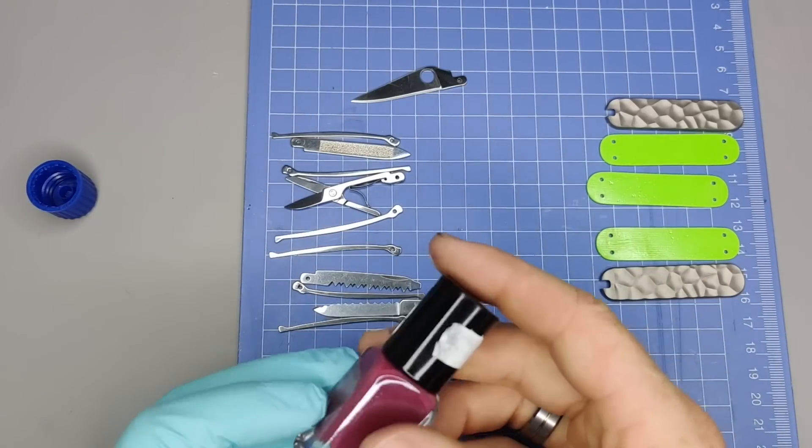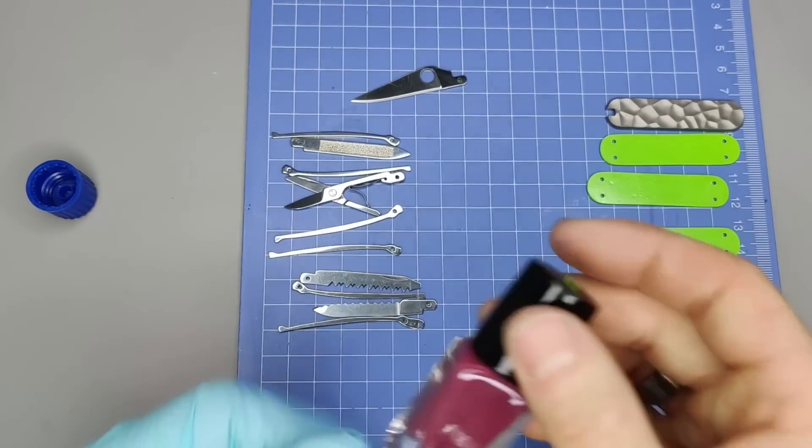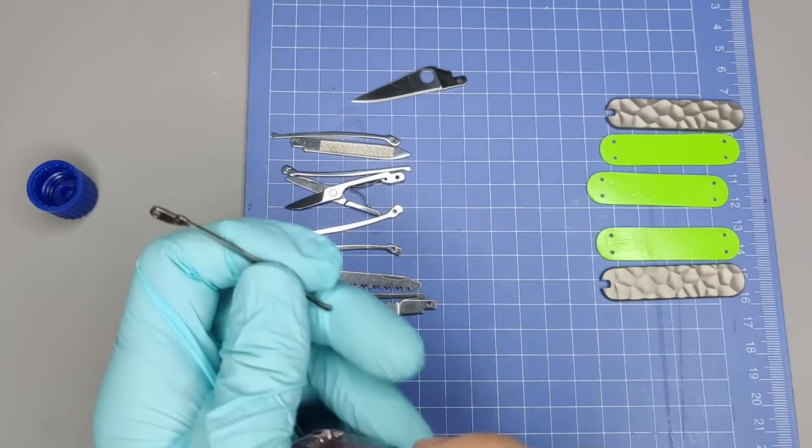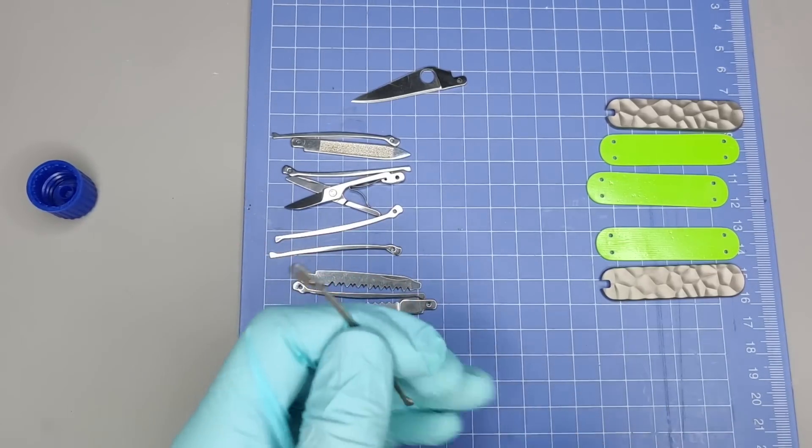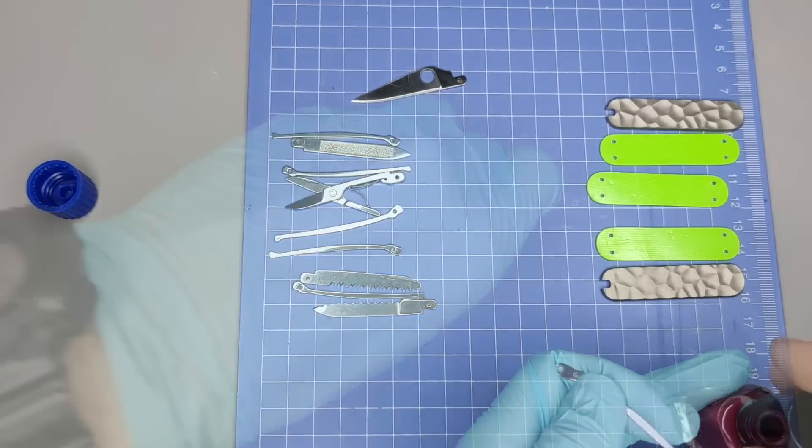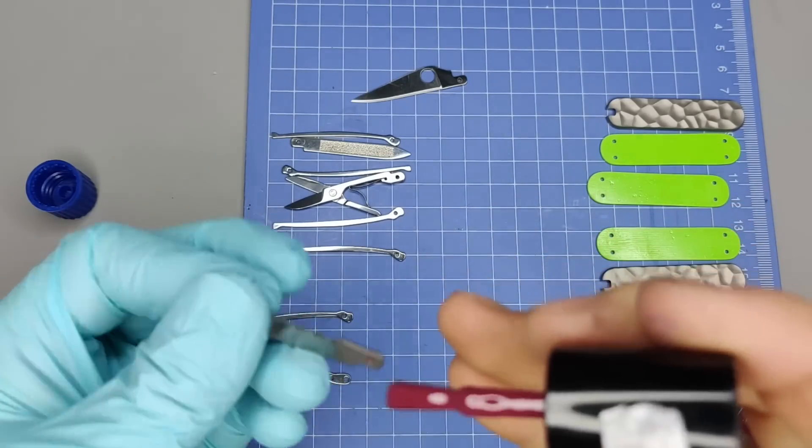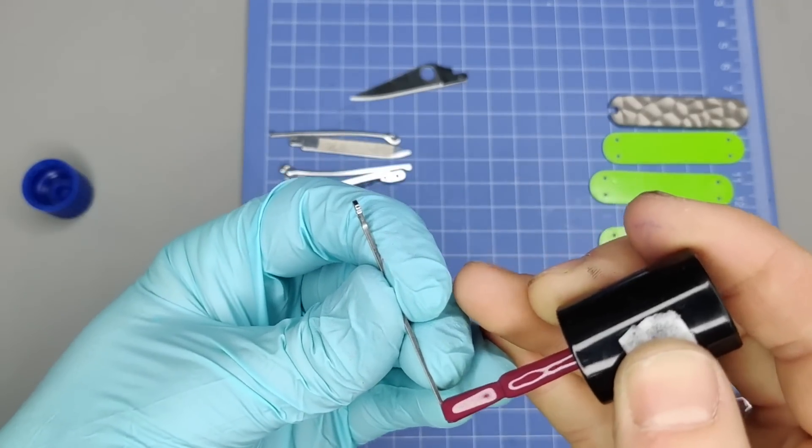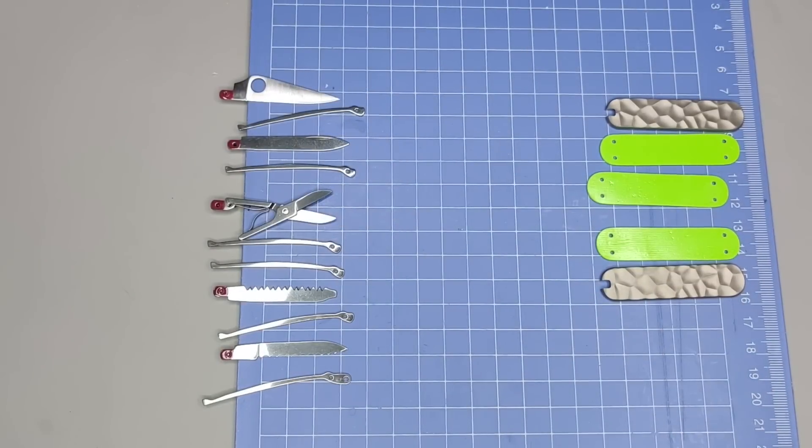Alright, the next step is basically we're going to use some fingernail polish. And we're going to apply it to any part of the tool that is going to be basically pivoting or rubbing. So now what we need to do is wait for these to dry. And then we can begin the acid etching process.